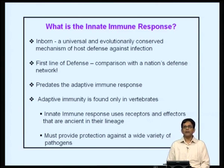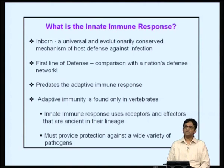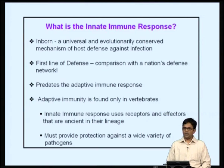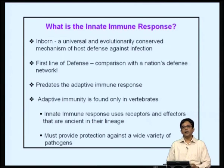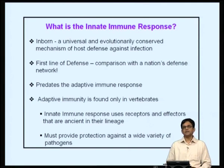I would like to compare the immune response to a nation's defense network. A nation's defense network consists of the army, the air force, the navy, and so on, which all come together to form the defense network. We have all these different agencies because the enemy can come in either through the sea, through the air, or through the land. Similarly, for the immune system, it has several different groups of cells, molecules, and networks that take care of host defense.